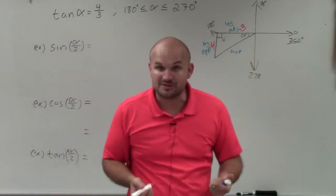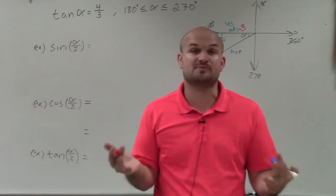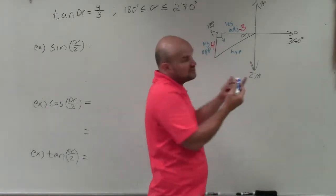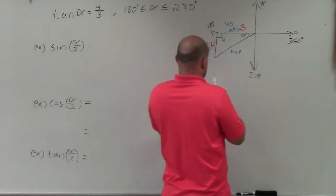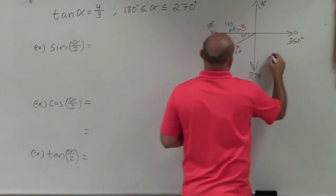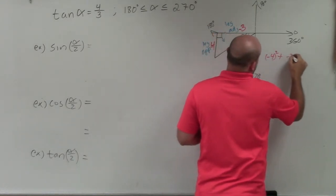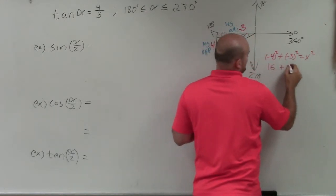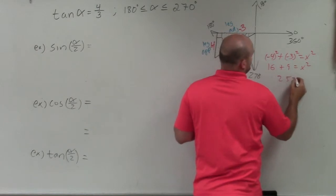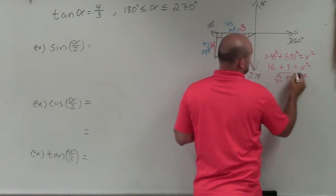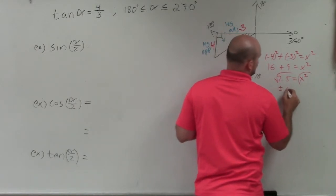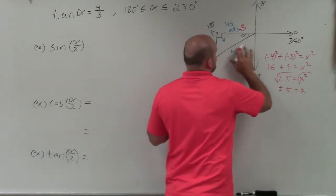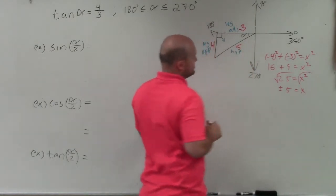Now we need to figure out the hypotenuse. You could use Pythagorean triples, or use the Pythagorean theorem. Calling the hypotenuse x: negative 4 squared plus negative 3 squared equals x squared, giving 16 plus 9 equals x squared, so 25 equals x squared. Taking the square root gives plus or minus 5, but the hypotenuse is always positive, so it's 5.